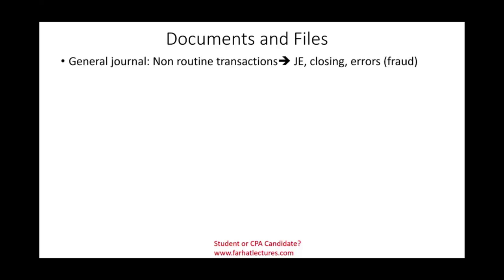Let's talk about documents and files involved in this process. First, the general journal, where we book non-routine transactions such as adjusting entries. If someone wants to commit fraud — since the computer won't do it — they will process a fraudulent journal entry in the general journal. The general journal is where you journalize non-routine entries; routine entries are processed through the computer system as part of special journals.